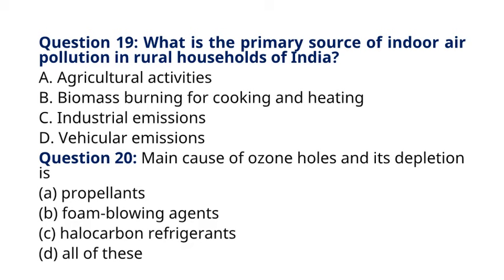Question 19. Main cause of ozone holes and its depletion is: A. Propellants. B. Foam-blowing agents. C. Halocarbon refrigerants. D. All of these. The correct answer to question 19 is option D. All of these. Explanation: ozone depletion, including the formation of ozone holes in the Earth's stratosphere, is primarily caused by the release of halocarbon refrigerants, propellants, and foam-blowing agents containing ozone-depleting substances, ODS.